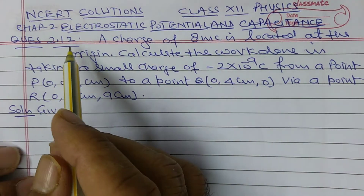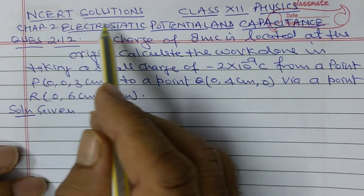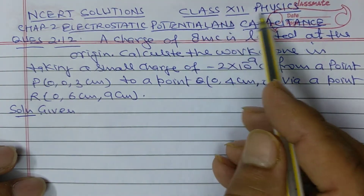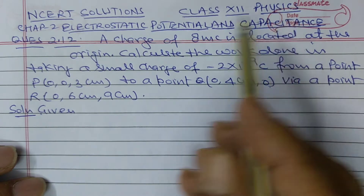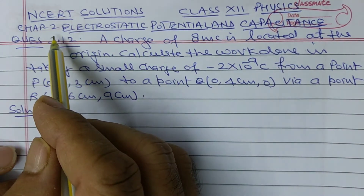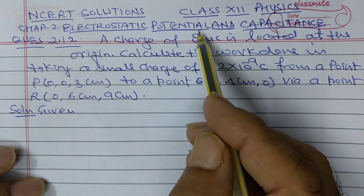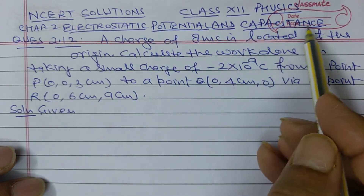Hello students, NCRD Solution, Class 12 Physics, Chapter number 2: Electric Potential and Capacitance.